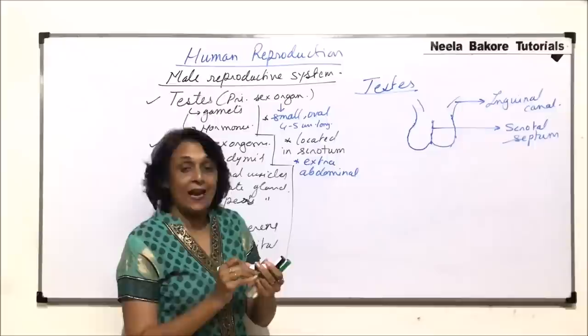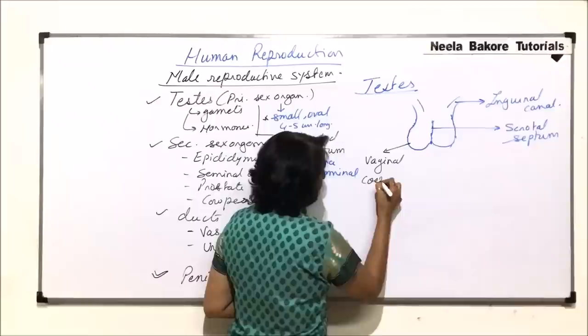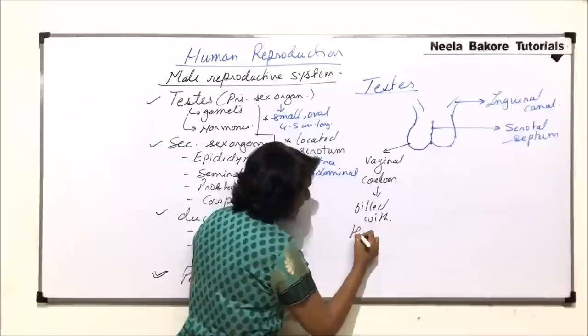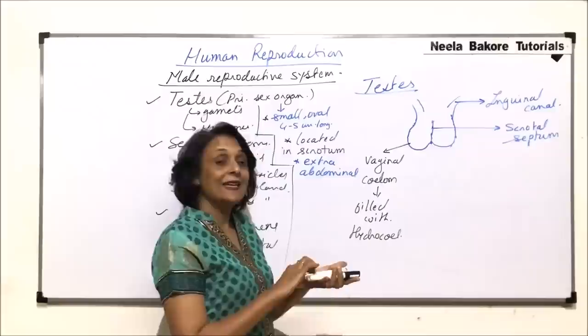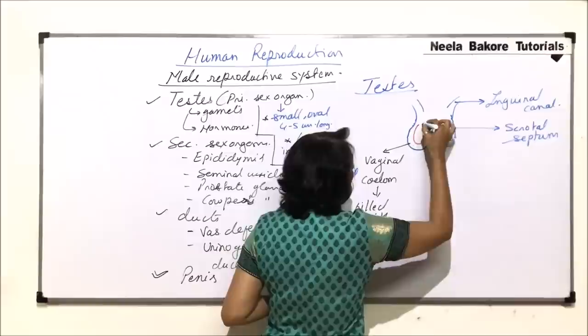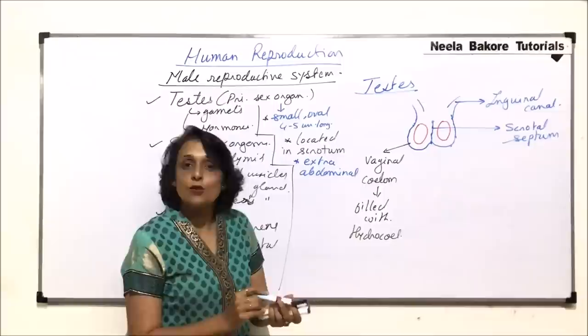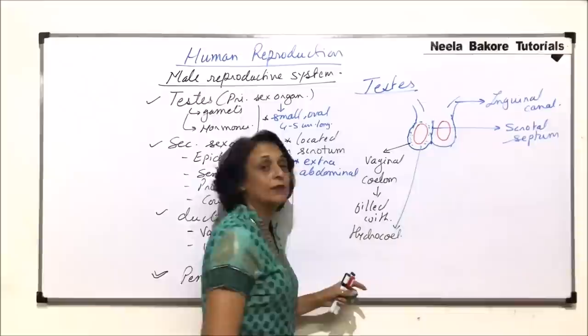The scrotal sac has a cavity known as the vaginal sac or vaginal coelom. This cavity is filled with a tissue known as hydrocele. The testis is this oval structure lying within this cavity, embedded in the hydrocele tissue which surrounds it.